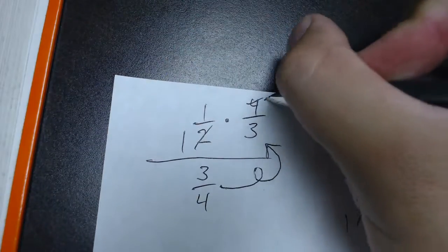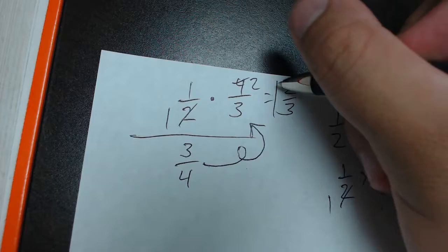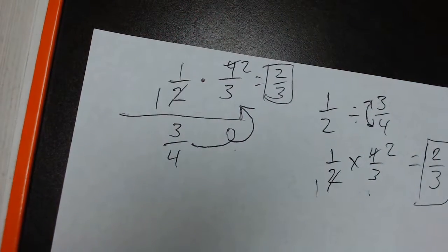From there I just cancel, or I cross-cancel 1 and 2, and then I still get the same answer of 2 thirds. But I did it in a fraction of the time.